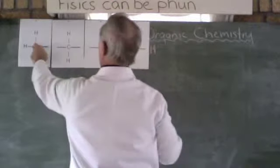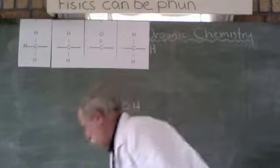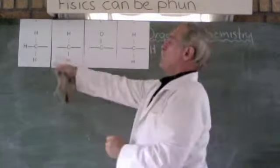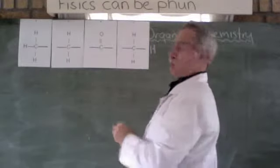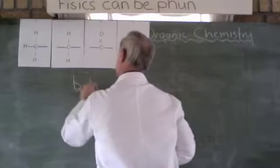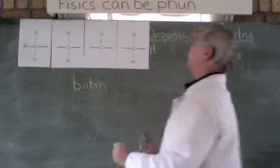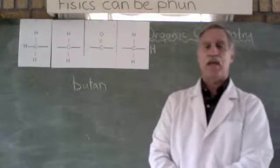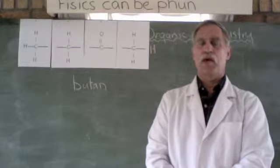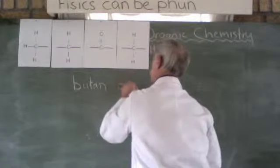One, two, three, four carbons. So methane, ethane, propane, butane. But the ketones end in 'one'. Ketone, so butanone.